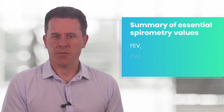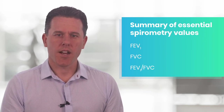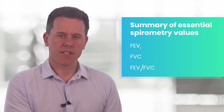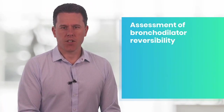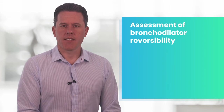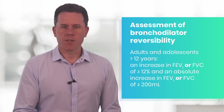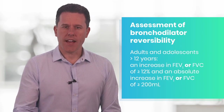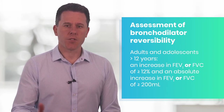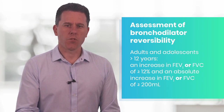So purely based on those two measurements — the FEV1, the forced vital capacity, and the ratio of those two numbers — we're able to tell whether the patient has airflow obstruction, airflow restriction, or normal spirometry. We then repeat the spirometry after having administered the bronchodilator. A significant bronchodilator response means that either the FEV1 or the FVC improves by both 12% and 200 mL.